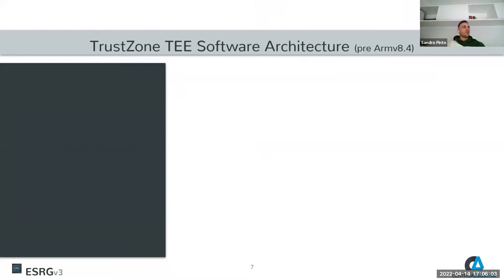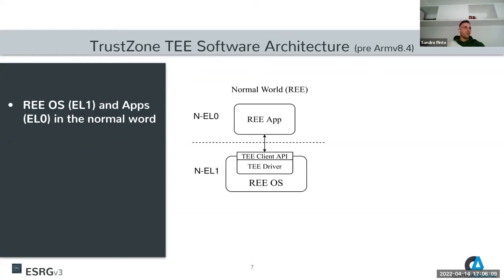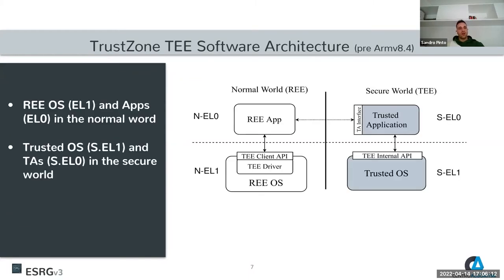I will start from the overall TrustZone TEE software architecture. TrustZone is centered around the concept of protection domains — you have the normal world and the secure world. In the normal world, you typically run your rich execution environment or main operating system such as Android and your normal applications. In the secure world, you run a trusted operating system that is minimalistic compared to the main OS, responsible for managing different trusted applications.